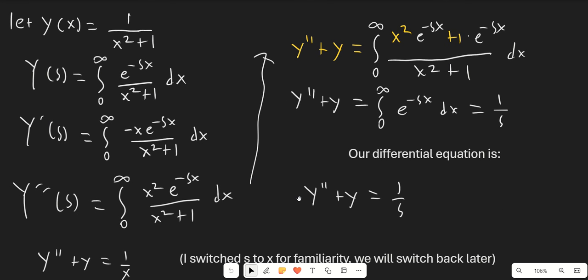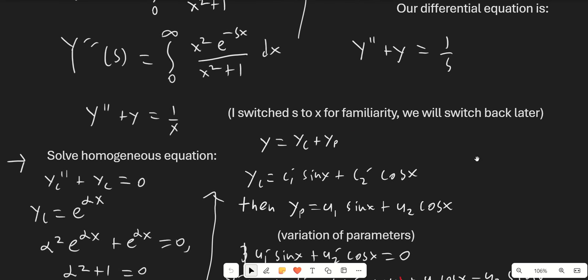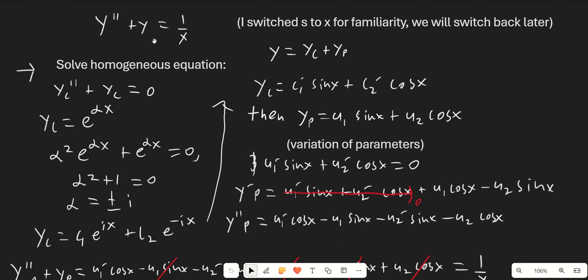So our differential equation is Y'' plus Y equals 1 over s. I'm going to switch s to x because I'm more used to solving differential equations with x, and we'll replace x with s once we solve it. We have a second order non-homogeneous linear differential equation. We would usually use the Laplace transform to solve these, but because we have 1 over x, we cannot do that. So instead, we're going to use variation of parameters.